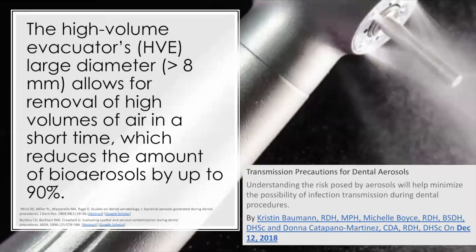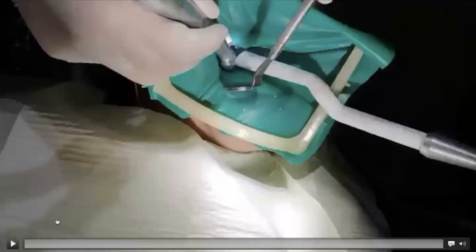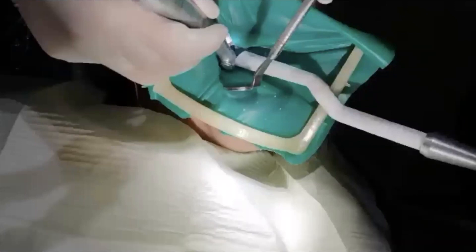Why is this so? The high volume evacuator has a large diameter tip, about 8 millimeters, that allows for the removal of high volumes of air in a short time, which reduces the amount of bioaerosols by up to 90%. This is a video of three root canal treatments I performed, and I asked permission from the patients to take a video for lecture purposes. Let's watch this one-minute video.